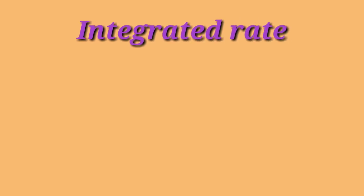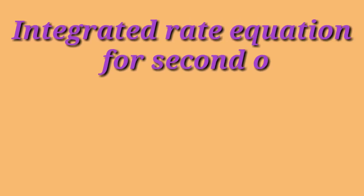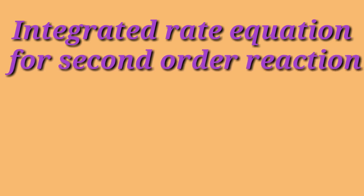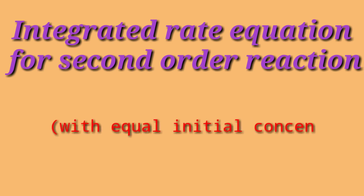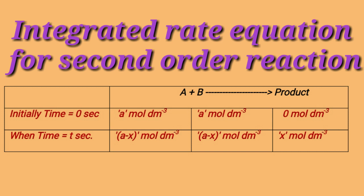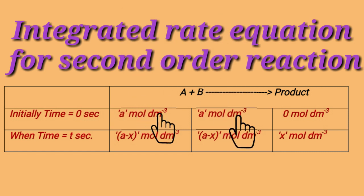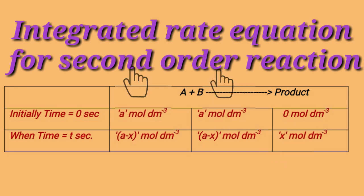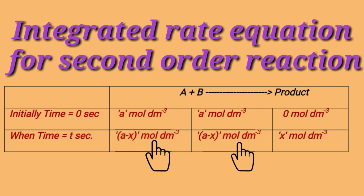We'll now study the integrated rate equation for second-order reaction with equal initial concentration. Consider the reaction A plus B gives product. Initially, when time equals zero, the concentration of both reactants is equal — A moles per dm³ each — and formation of product is zero. After time t, if x moles per dm³ of product is formed, then the concentration of each remaining reactant is A minus x moles per dm³.